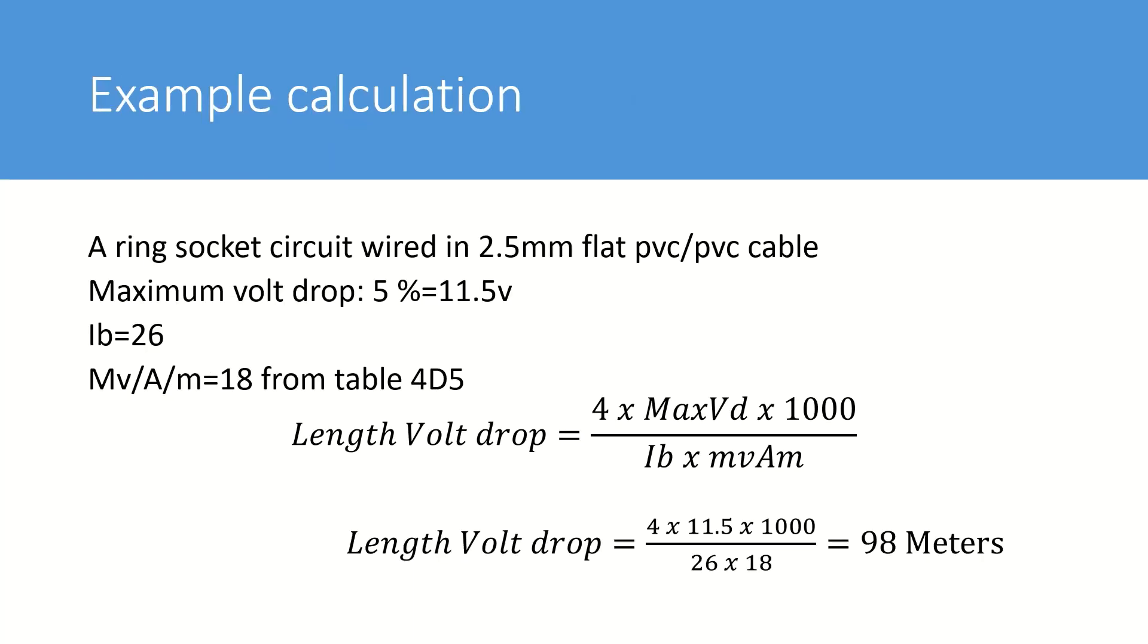So here we have an example calculation. If we take the example of a ring socket circuit wired in 2.5 mil flat PVC cable with a maximum volt drop of five percent which comes to 11.5 volts. The design current we've taken to be 26 amps and the millivolts per ampere per meter is 18 and that's taken from table 4D5.